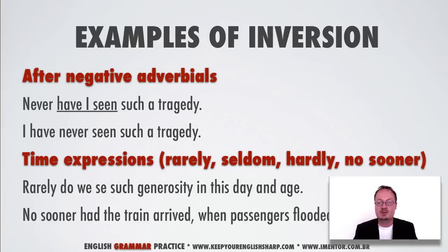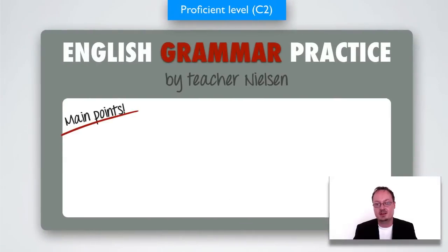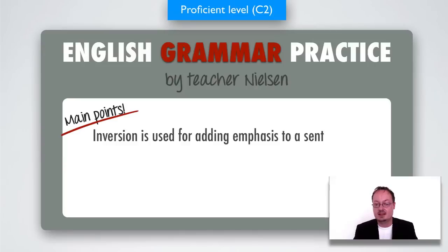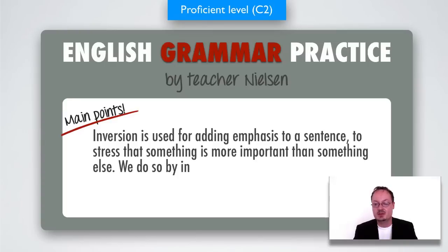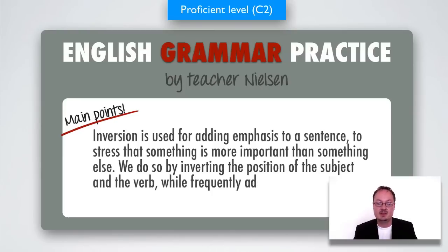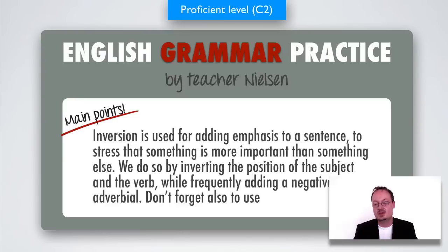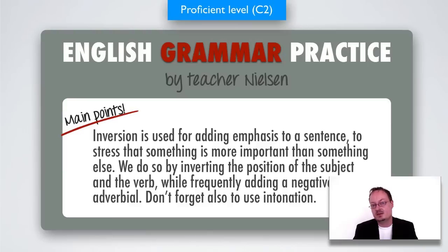Alright, let's just sum up for this first part. Inversion is used for adding emphasis to a sentence, to stress that something is more important than something else. We do so by inverting the position of the subject and the verb while frequently adding a negative adverbial. But don't forget also to use intonation — without a good dynamic, interesting intonation to accompany the emphasis, the inversion doesn't really make any sense. Thanks for coming by, see you soon again.